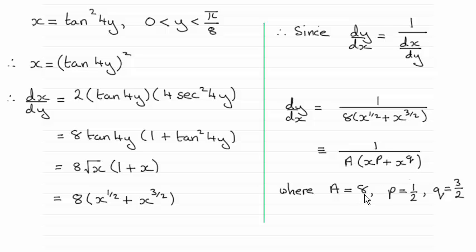And you can see it's 8 for a, p is a half, q is one half, or 3 over 2, as I've got here.